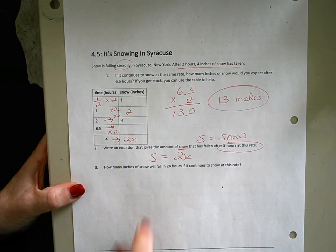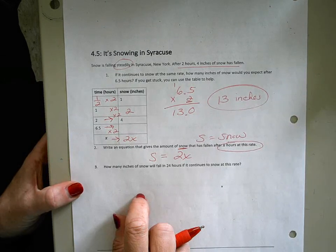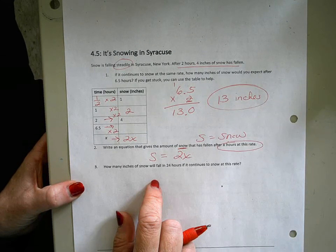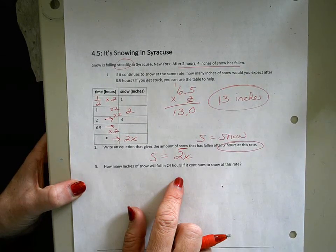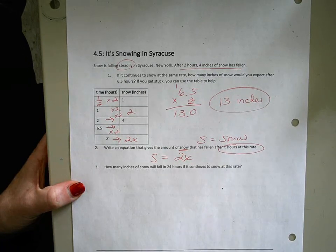And then I can use this equation to answer our last question: how many inches of snow will fall in 24 hours if it continues to snow at this rate? So the mistake that students sometimes are confused by is where do we put the 24.